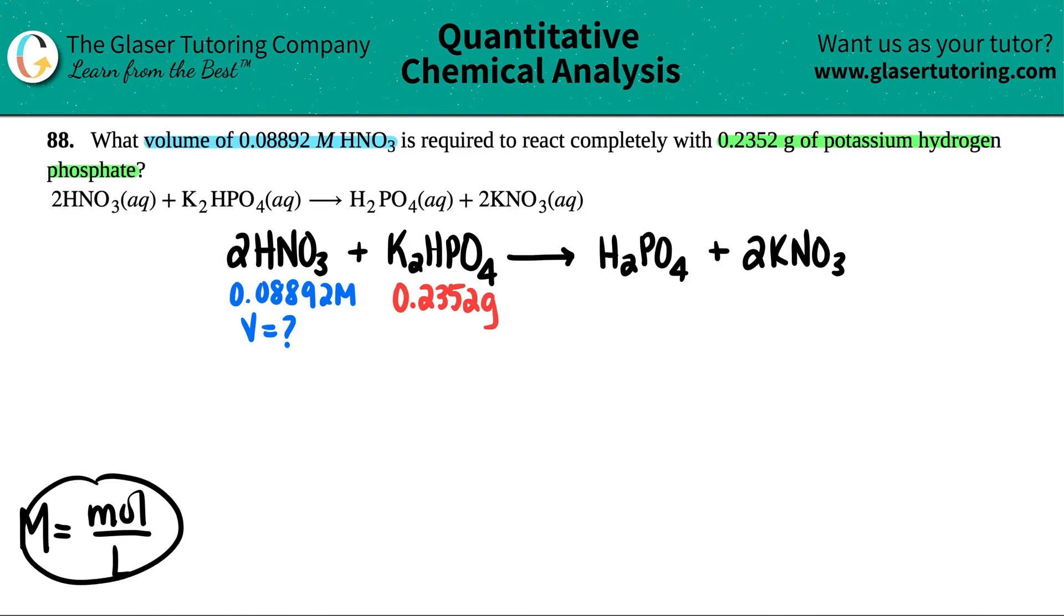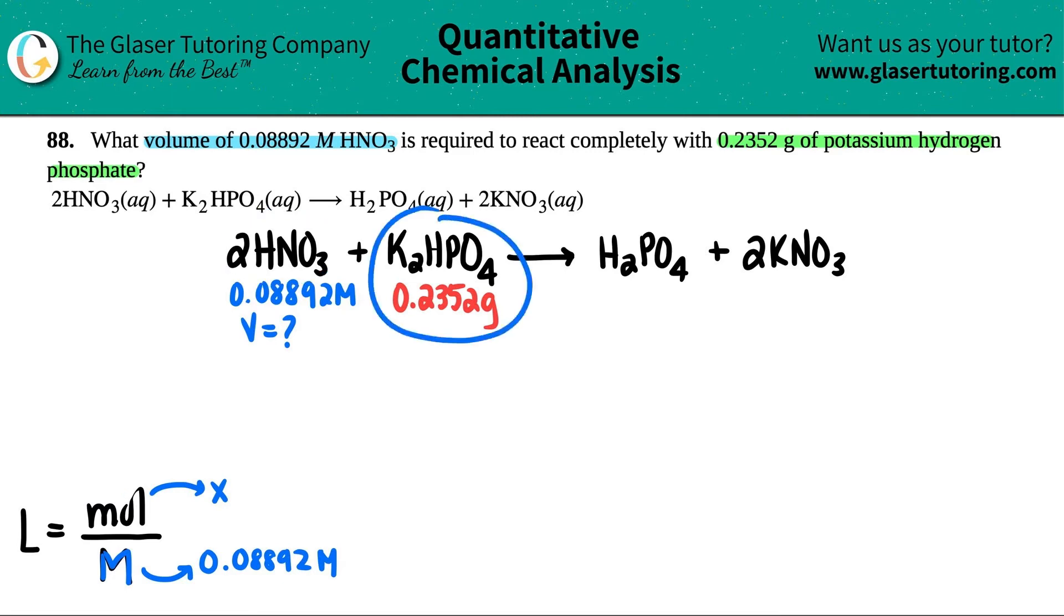So if I can just rearrange this formula just for simplicity of the video, you can keep it like this and then cross multiply and solve. But just for simplicity of the video, I can just say that the same formula would be liters equals moles divided by molarity. Now they told me what the molarity was. They told me that capital M was 0.08892 molarity. Now if they're looking for a volume, which is the liters, that means that I should know what the moles are. But they didn't tell me what the moles were. So this is what we're secretly have to find. I have to find out the moles of HNO3.